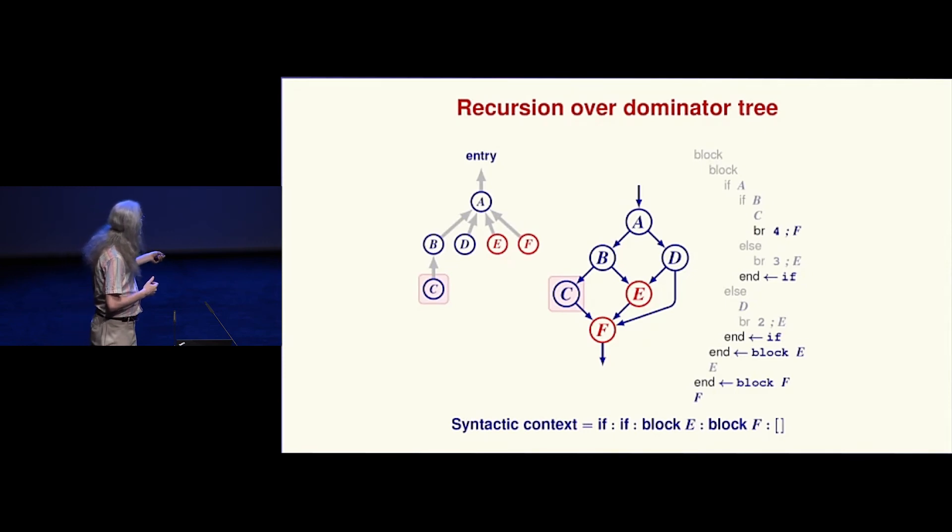How do I know what br instruction to emit? The other argument to the recursive function besides the dominator tree is the syntactic context. If you've ever played with an operational semantics that keeps track of the context of where things are evaluated, this is just the context in terms of its control flow. I get to see it needs to go to F. I just look at the context: what's there? Oh, this is an if, this is an if, this is the block that precedes E, this is the block that precedes F. Aha, the block that precedes F is the one I want, so that's the br instruction that I'm going to emit.